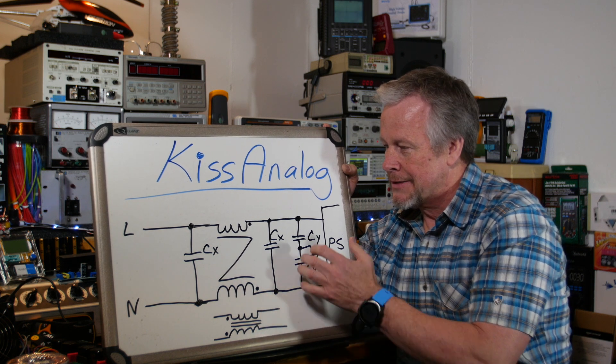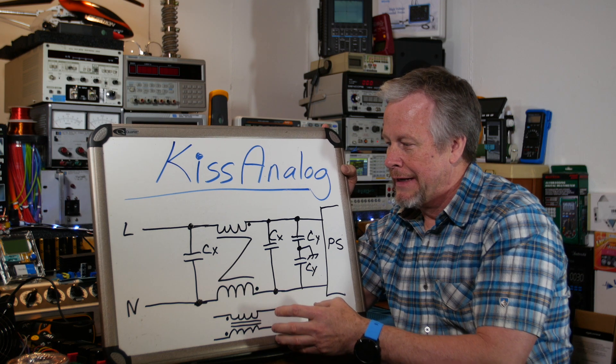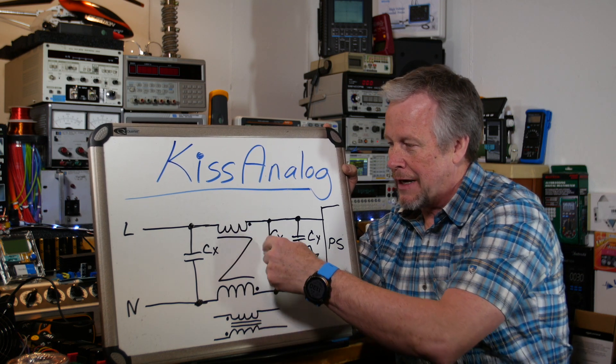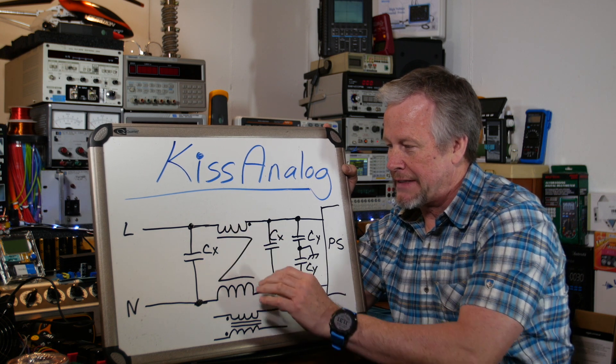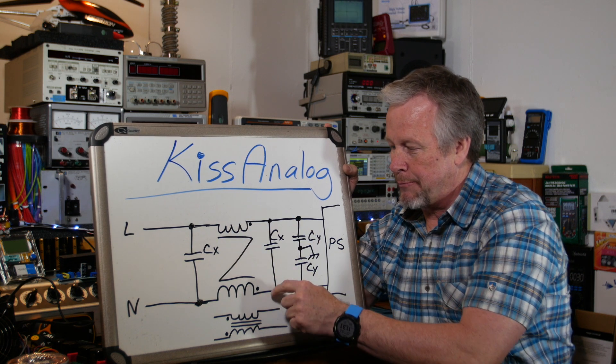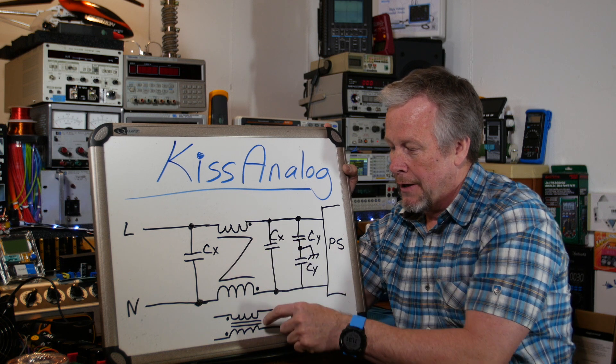So this is your common EMI filter and this is your common mode choke. This is the symbol showing that they're both on the same core and they're in the same polarity. The dots on this end.